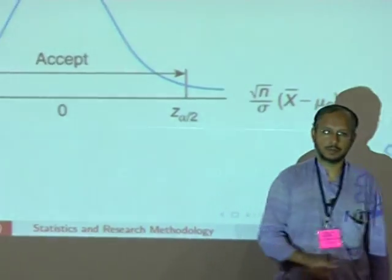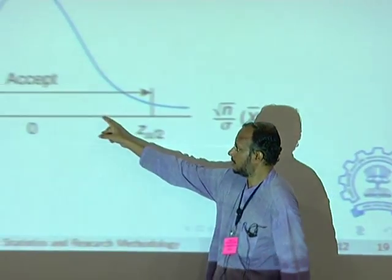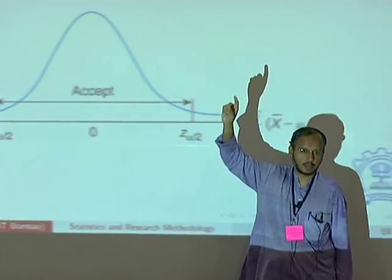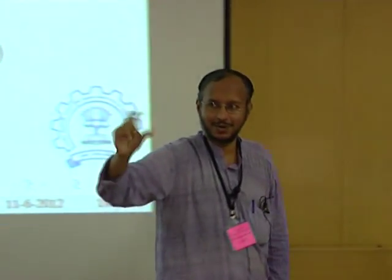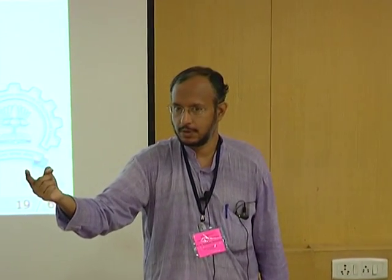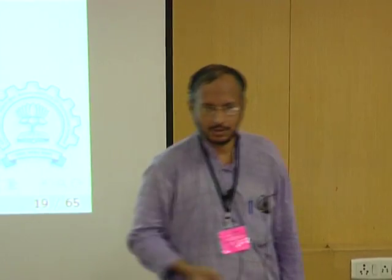That range is where my null hypothesis — drug equals sugar pill — is accepted. Actually, we do not like saying accepted. We were trying to prove a statement false. So the fact that I get a measurement in this range does not prove that the drug is a sugar pill. It means I failed to disprove that the drug was different from a sugar pill. I do not have enough evidence to say my drug is different from a sugar pill.